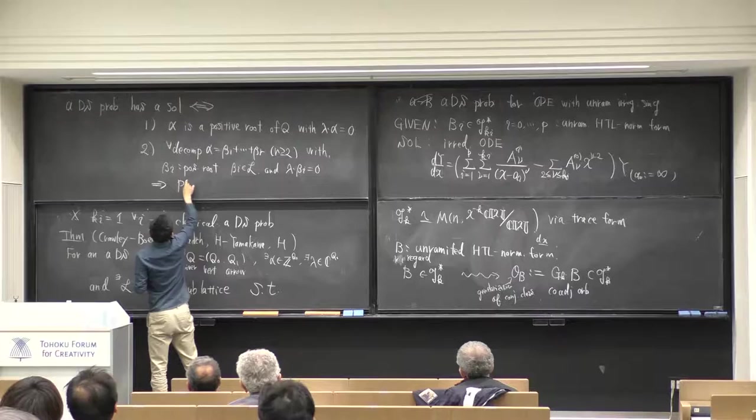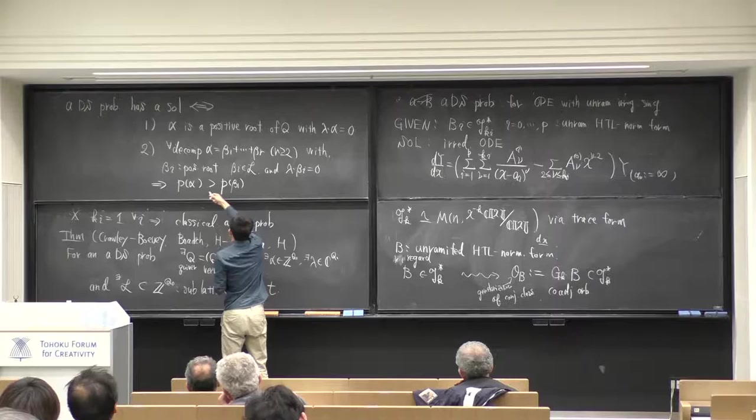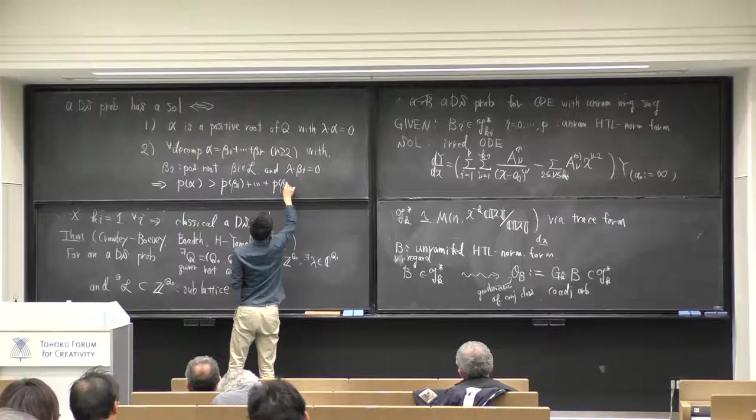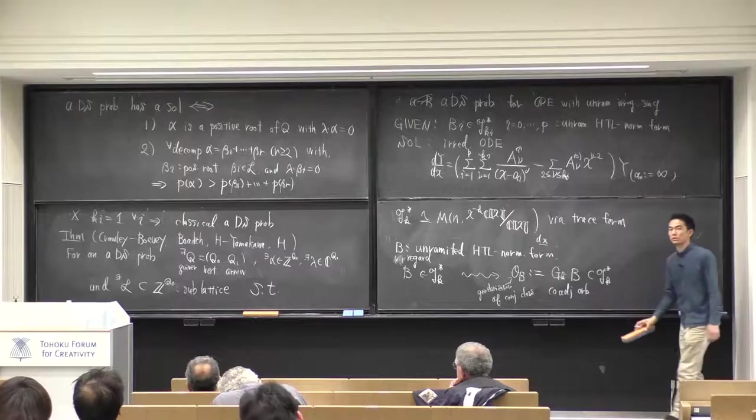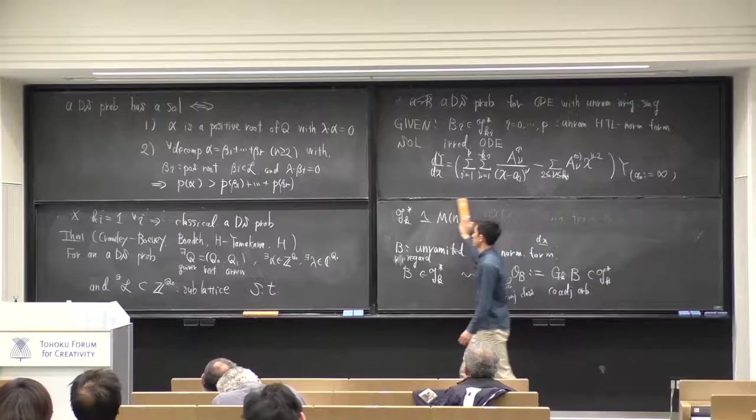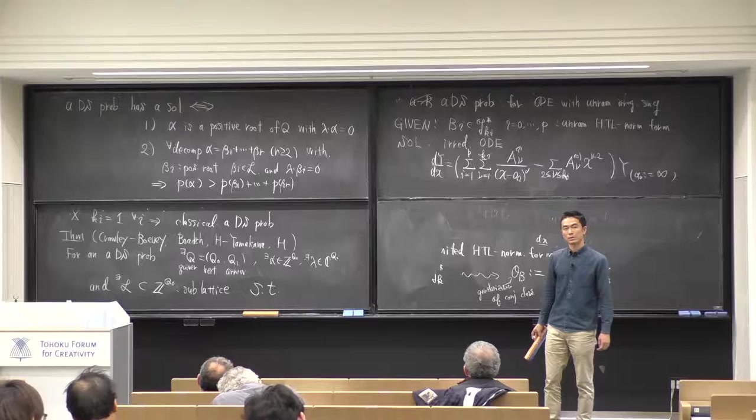The first condition is that the corresponding dimension vector alpha should be a positive root. Also the product of alpha and lambda should be zero. The second condition: if there exists any decomposition of alpha where the beta's are positive roots and elements in the sublattice L with product with lambda equal to zero, then a certain inequality involving the function P should be satisfied.